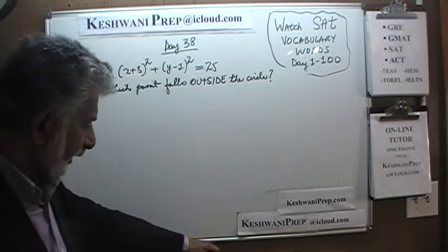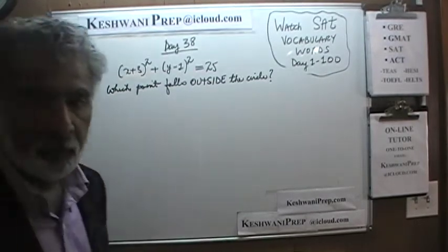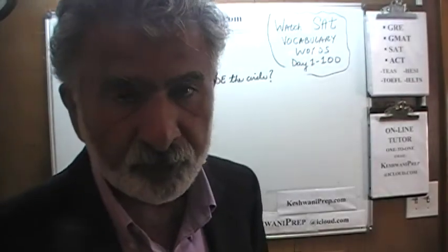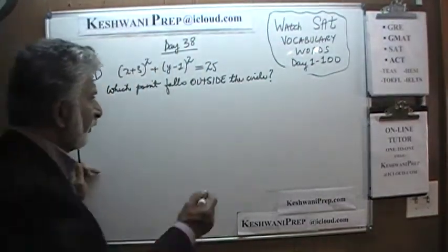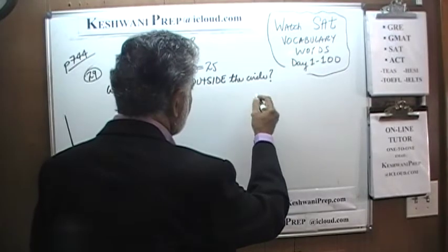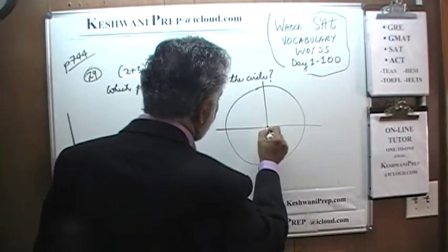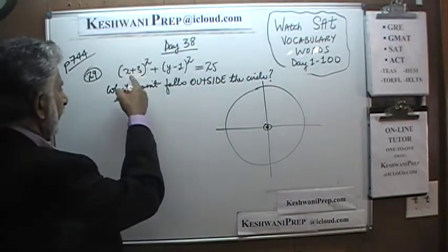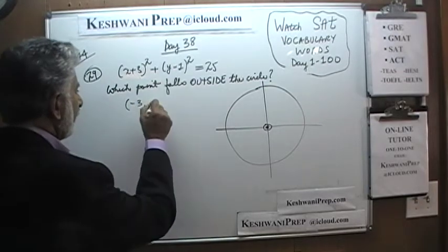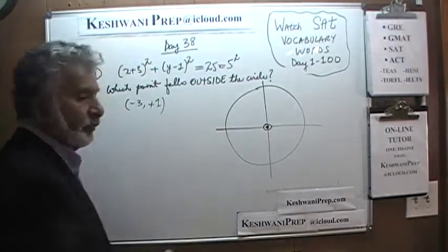Let's take a look at number 29. There are only two problems on that page. We are given an equation for a circle and four answer choices — four points — and our job is to locate the one that is outside the circle. So let's draw a circle first. The center of the circle is going to be negative 3, positive 1, and the radius, as you can clearly see, is 5.